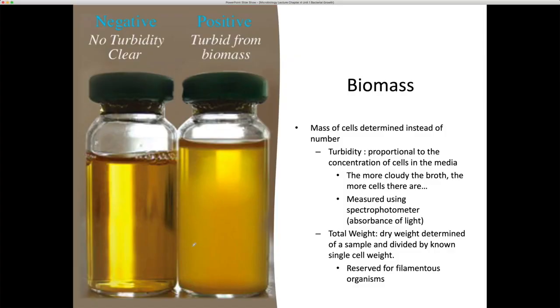Now, biomass is really kind of a growth versus no growth. We don't have a true mathematical number of the amount of cells, but we can use some instrumentation to give us a general idea in comparison. First, we can do it by growth or no growth. When we have a broth, it's normally very clear, like we have on the left. So this is clear, and this is cloudy, or also known as turbid.